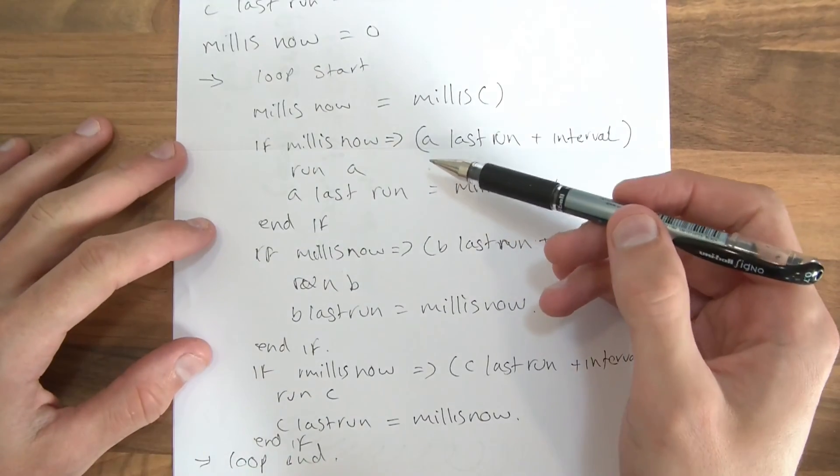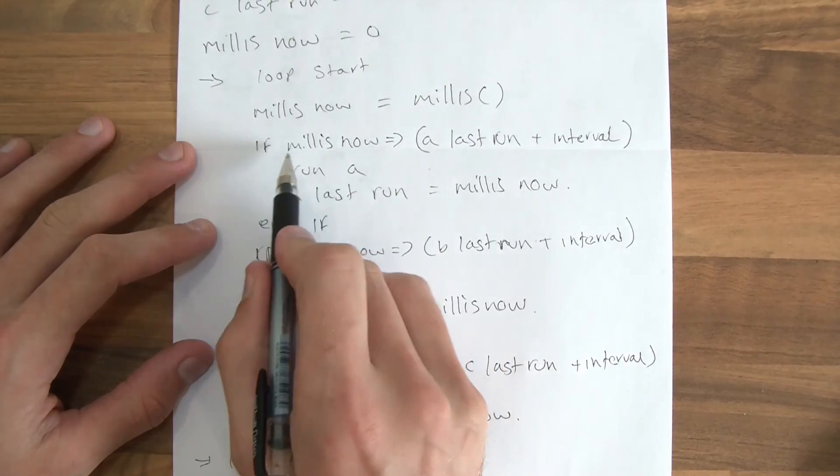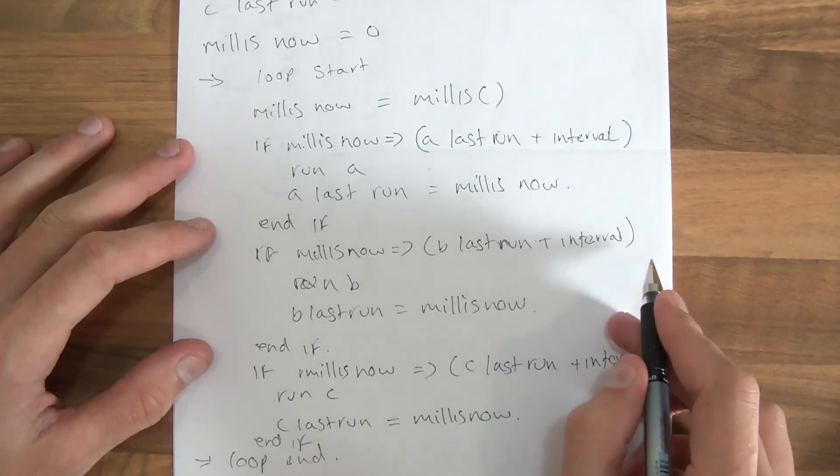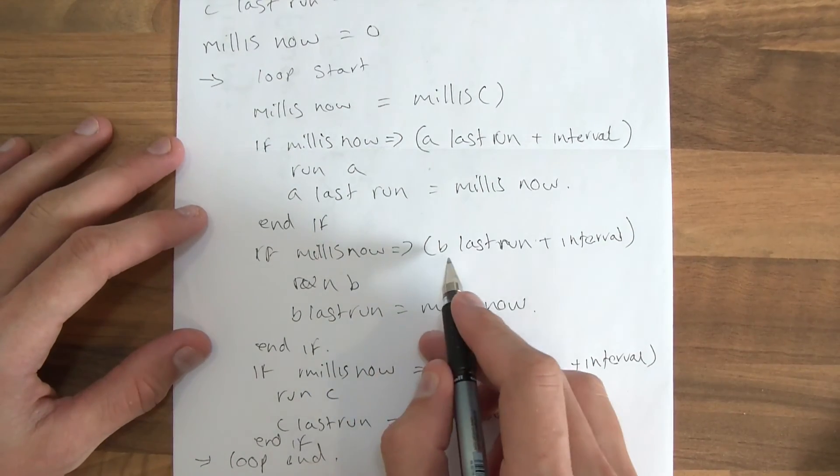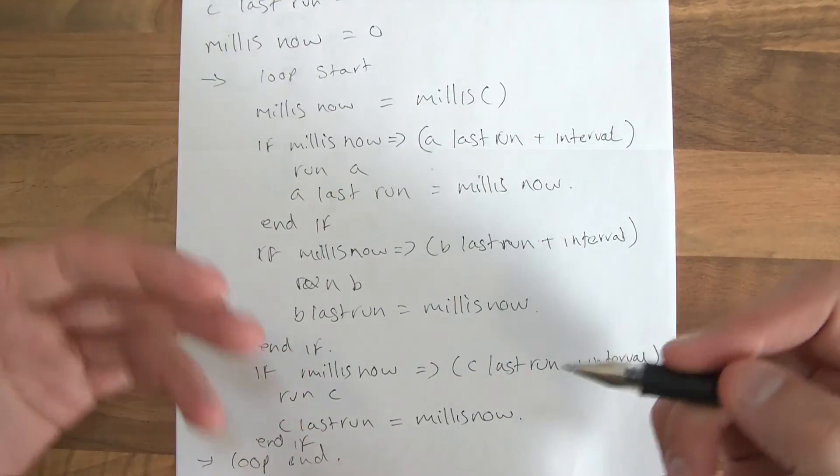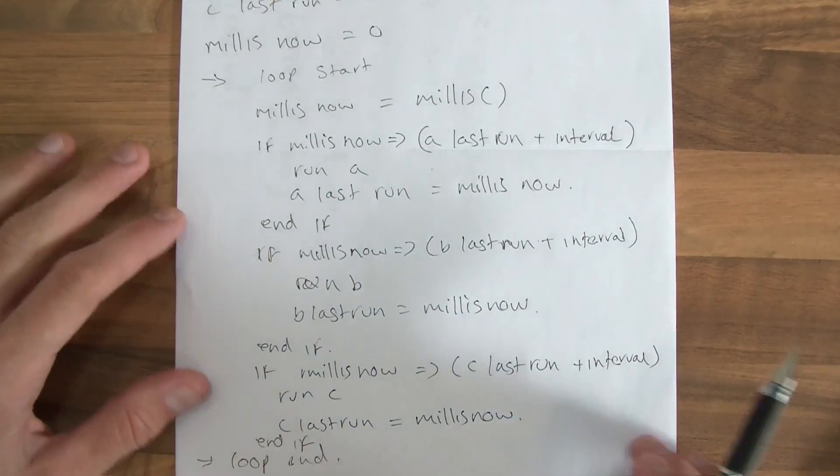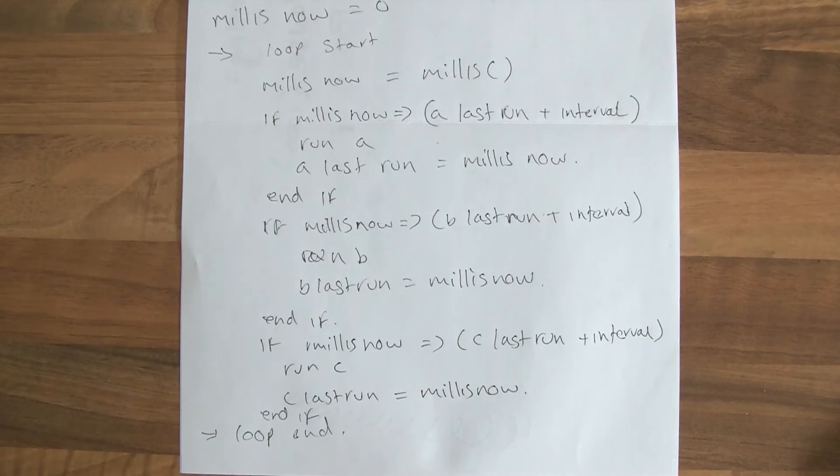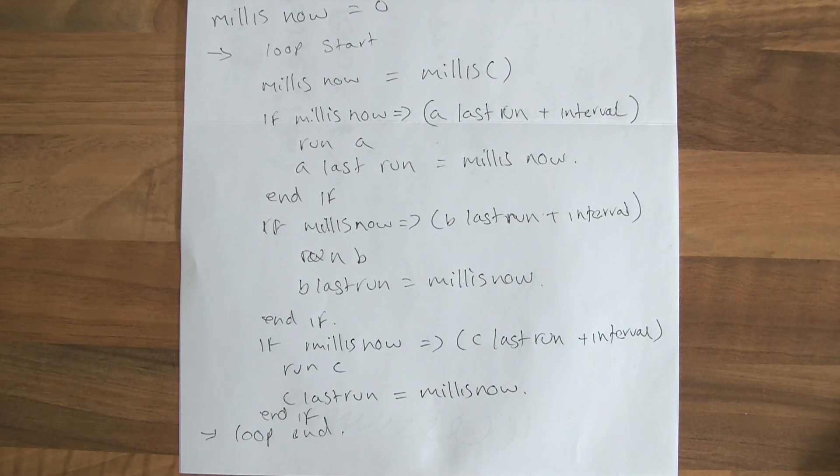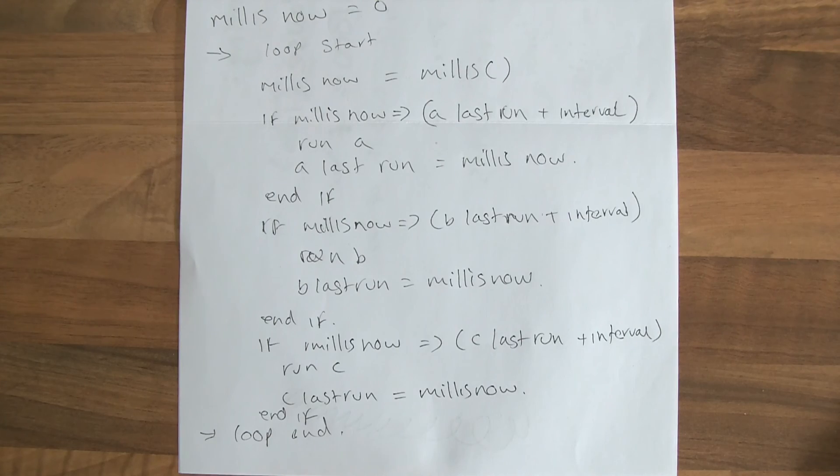You basically use this. This is the critical line here. If millis now is equals or greater than the last run plus the interval that you want, then run, and then of course update the last run. And this is how I manage time in my programs that I write for the Arduino, and it's very effective.